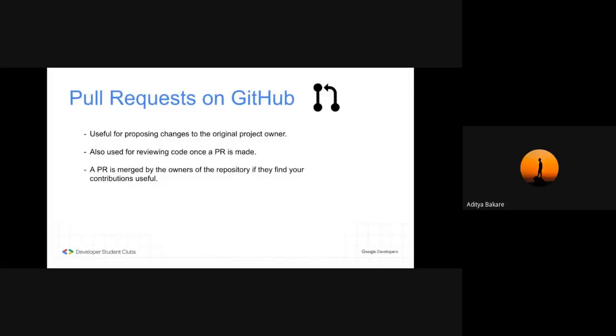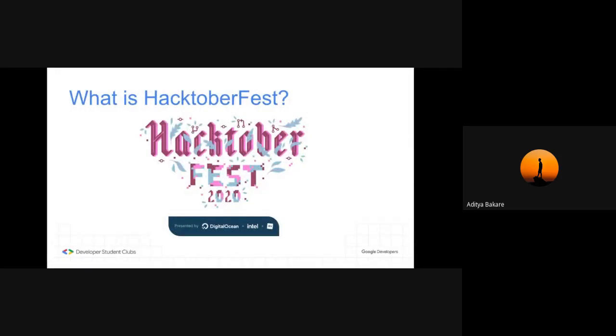As you might have seen on GitHub, there are many discussions that happen on pull requests. You send a pull request to tell them you want this code to be merged because it's an enhancement. They review it and if they find it useful, they merge it. I hope this clears your doubt. Let's move on.